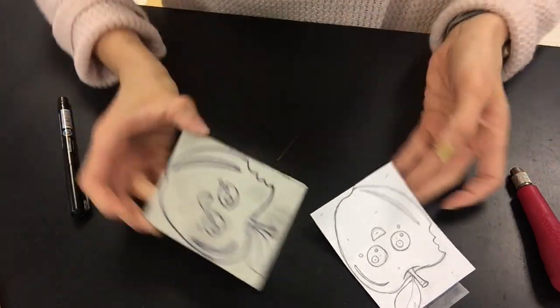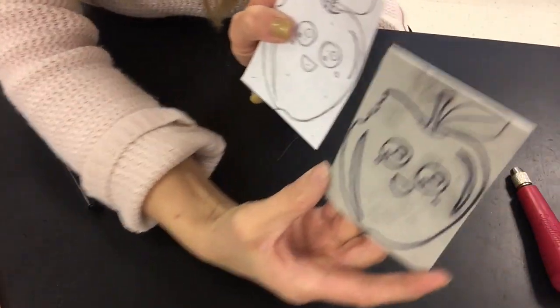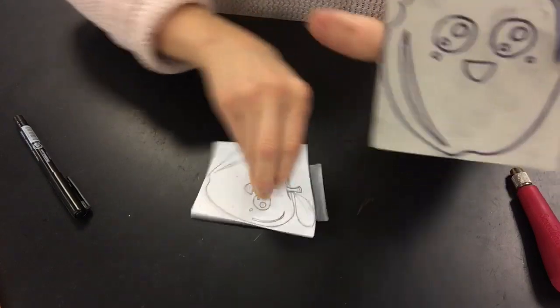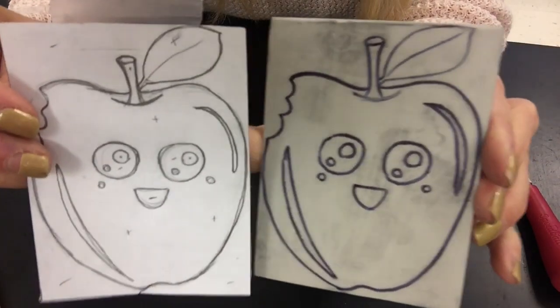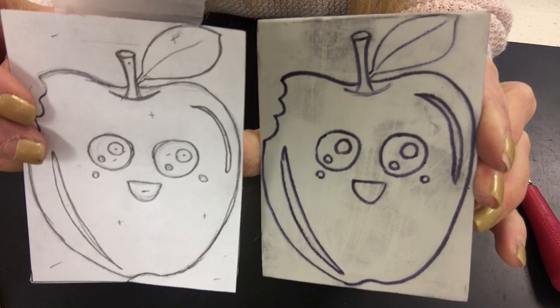All right, so I'm just going to double check. Did I get everything? I got the eyes. Okay. I got all the details on there. You want to make sure you do that.